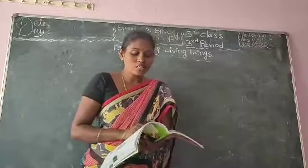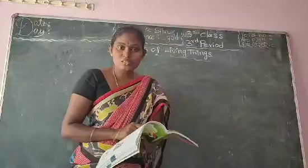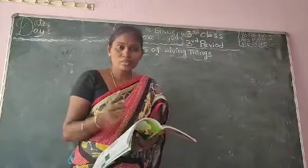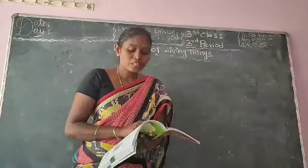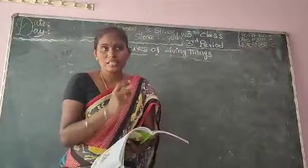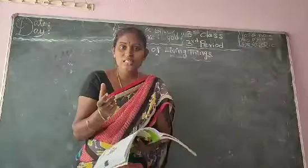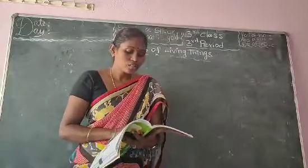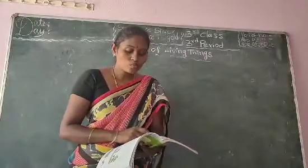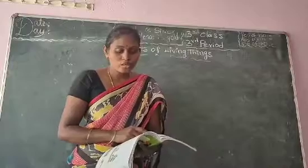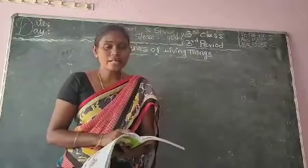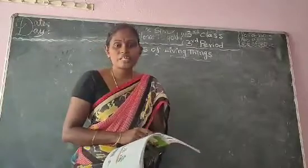Animals and plants are all living things. They have some features in common. Features means lakshanas — characteristics that are common to both animals and plants, and that make them different from non-living things. Living things: breathe, grow, move, eat food, give out waste, feel, reproduce, and die. These types of activities living things have.